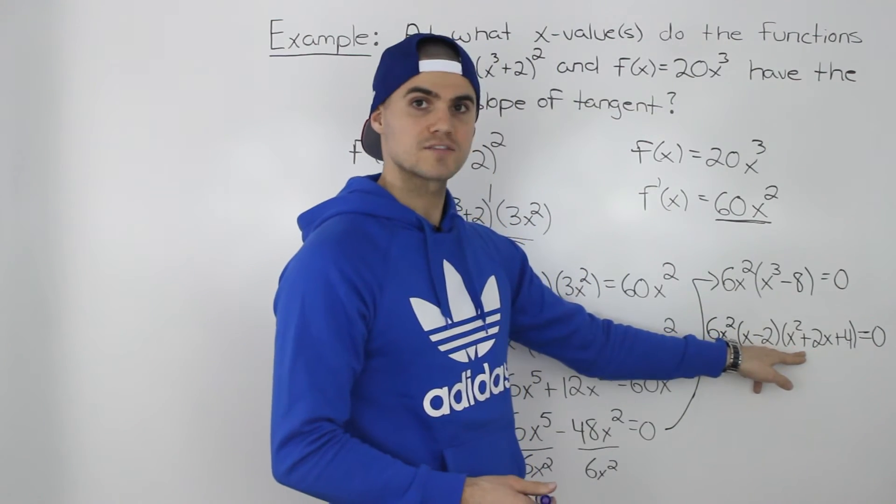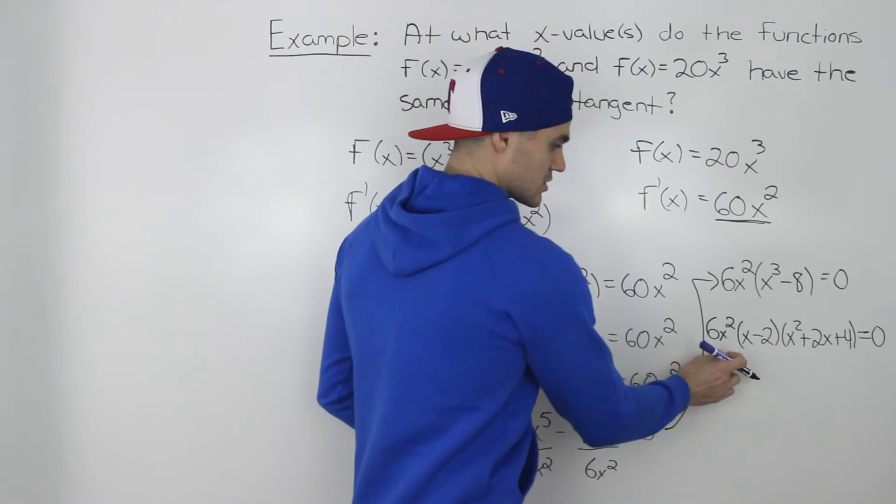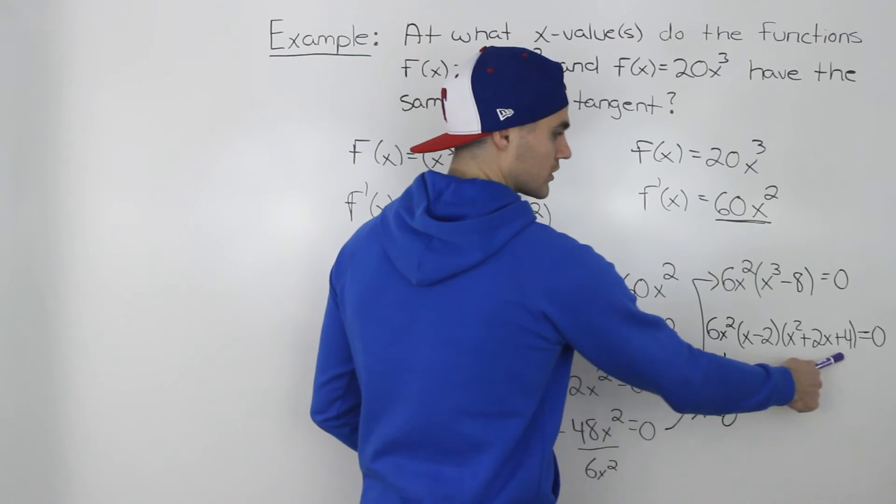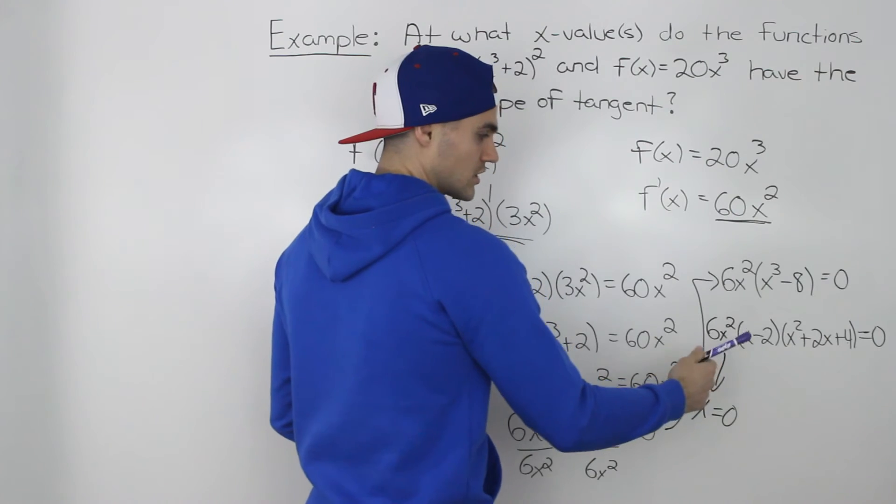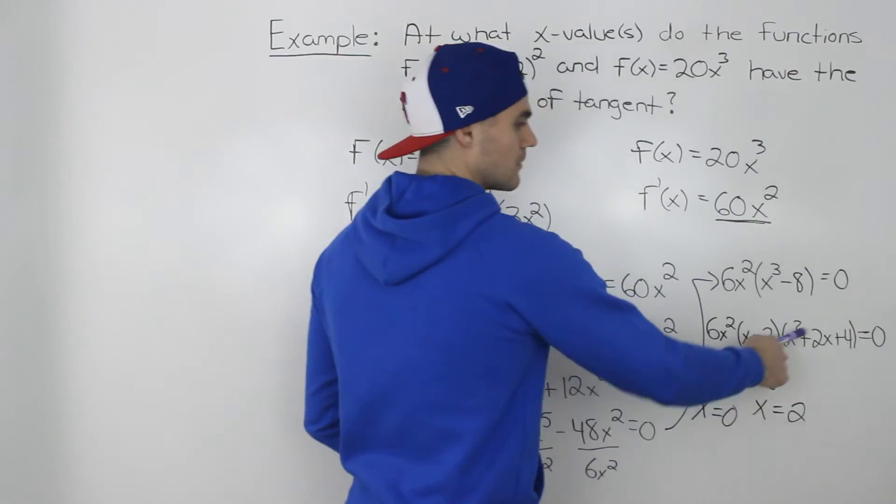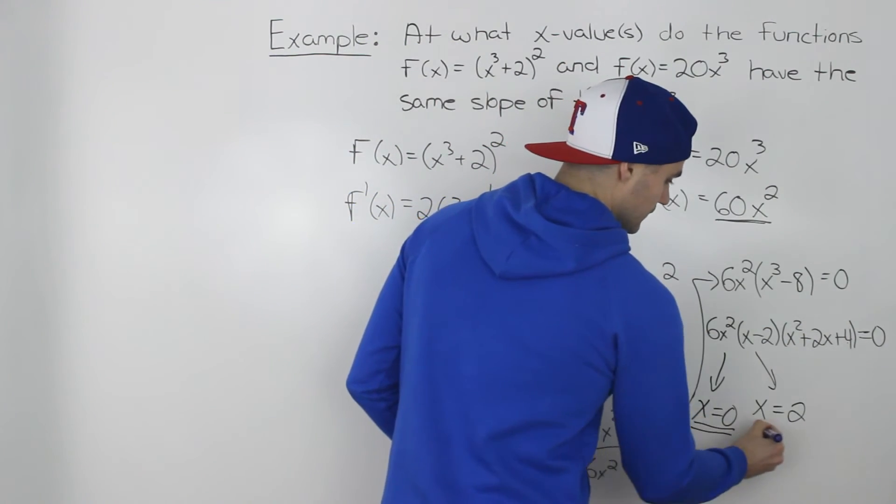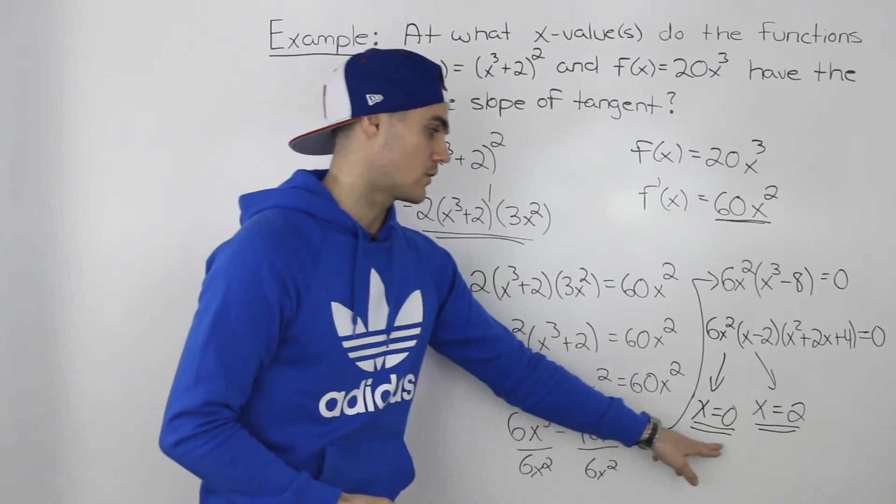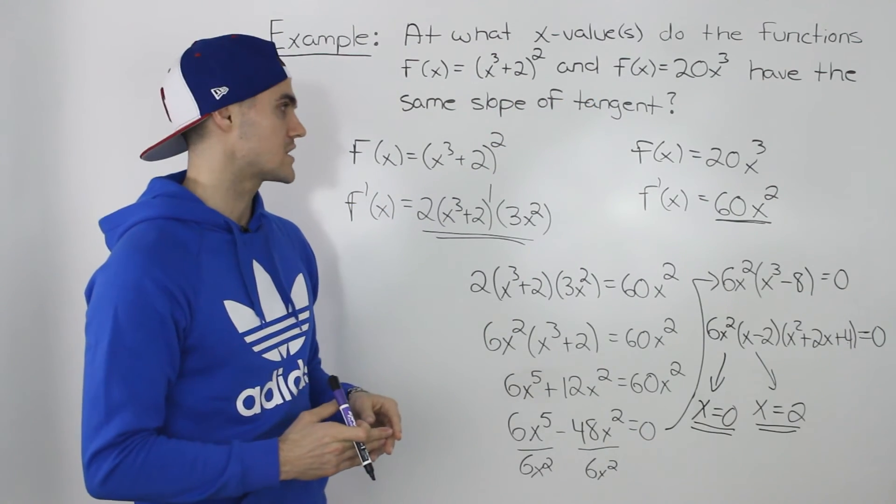Now this last bracket here, there are no x values that would make that bracket equal to 0. But these terms here, notice how an x value of 0 would make this whole expression on the left equal to 0. So that's one solution for this equation here. And then an x value of 2 would also make this left expression equal to 0. So those two x values are our final answers. At an x value of 0 and at an x value of 2, these two functions have the same slope of tangent.